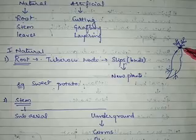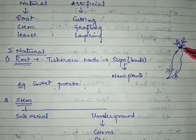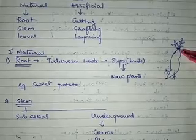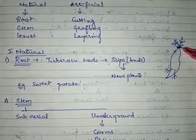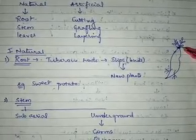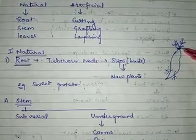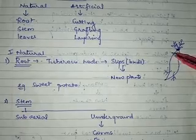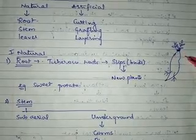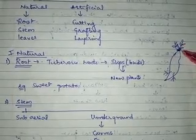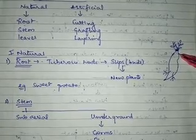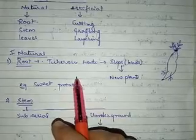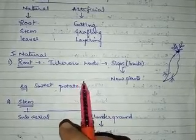There are buds present at the junction between the shoot and the root, and these buds are called slips. These buds can grow into a new plant. You can just cut a piece of sweet potato and plant it into the soil so that a new plant will grow from those slips or buds. That is vegetative propagation by roots.